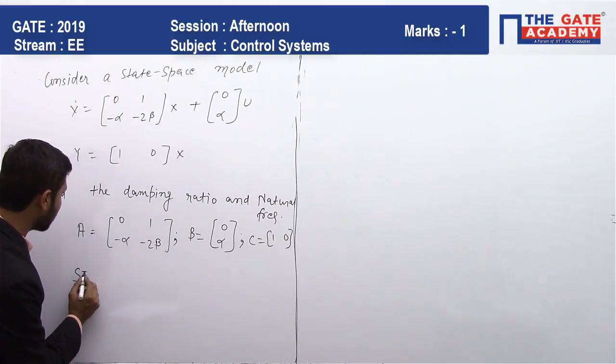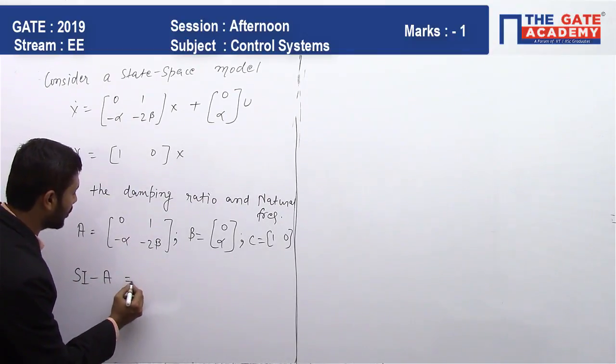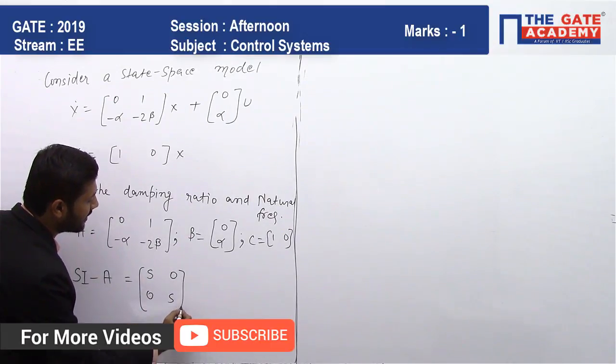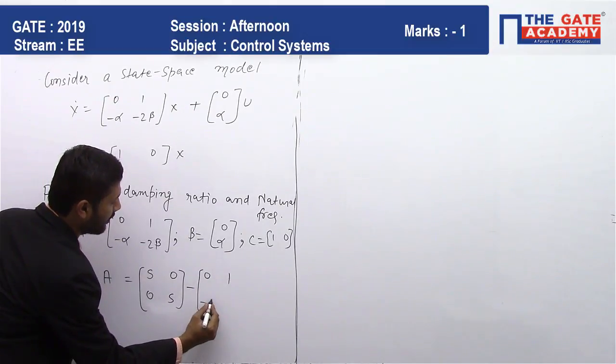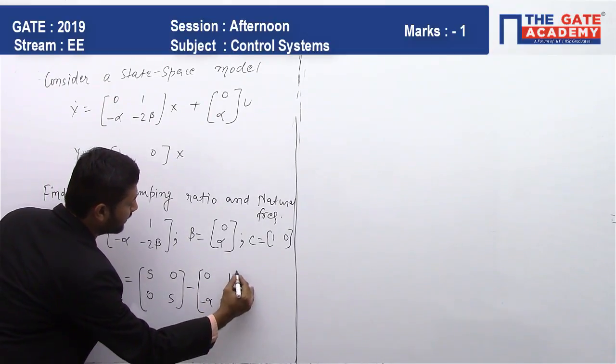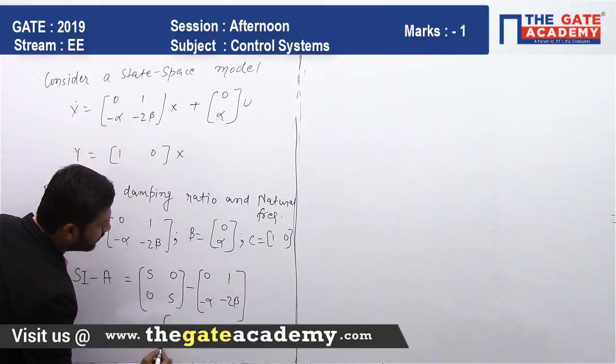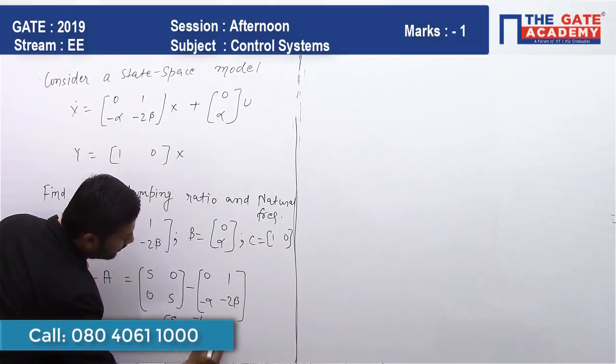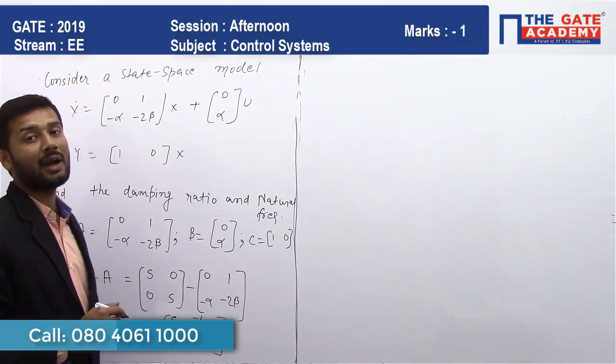So this is [S, 0; 0, S] minus [0, 1; -alpha, -2*beta] and that is equal to [S, -1; alpha, S+2*beta]. So this is SI minus A.